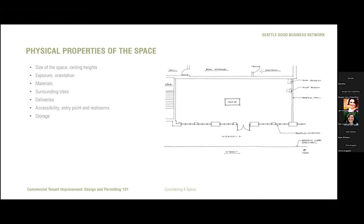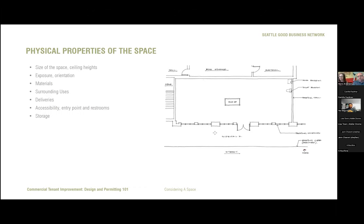By the time you're starting to look at a space, hopefully you've called an architect or designer, because there are important things to consider. On the right is a diagram of an existing empty space we'll use as an example. It's important to think about the size and shape of the space, ceiling heights, exposure to sun and neighbors. Is it an old brick building or newer concrete and glass? What are the surrounding uses, and are they compatible with your intended use? How do you get deliveries in? How does someone in a wheelchair or visually impaired person get in and out? And what are your storage options?